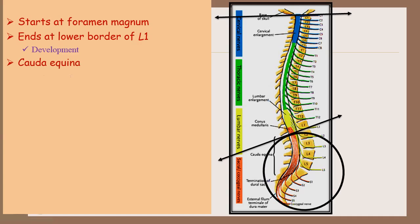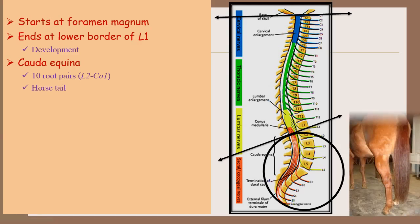The cauda equina is nothing but a bunch of 10 root pairs that is L2 to Co1 and these are the root pairs which have not travelled through their respective vertebral foramina. The cauda equina looks like a horse tail.